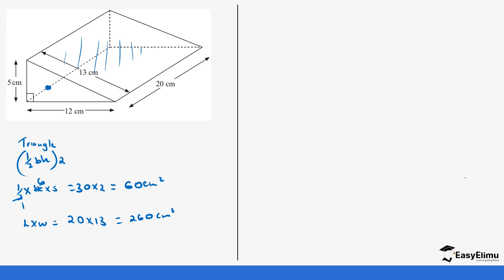Then next we are going to work on the rectangle at the bottom, which has length 20 and width 12 cm. So it's still going to be length times width, which is 20 times 12. When we work out 20 times 12 we get 240.